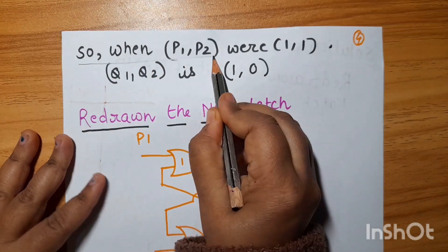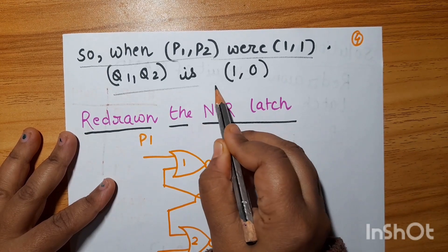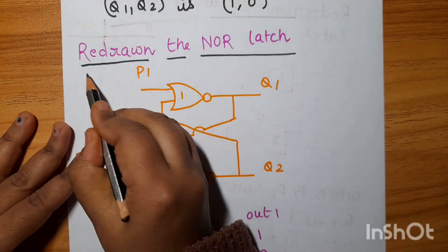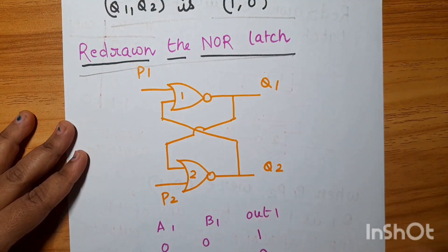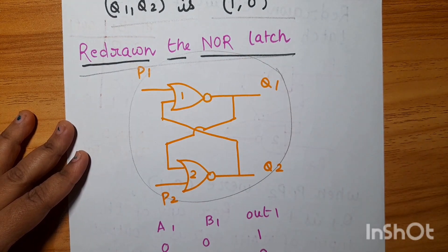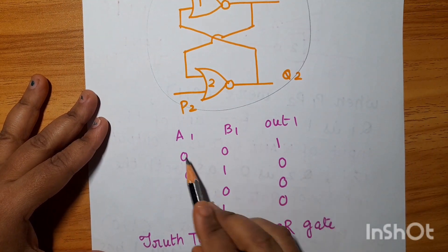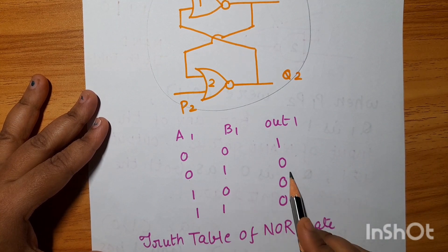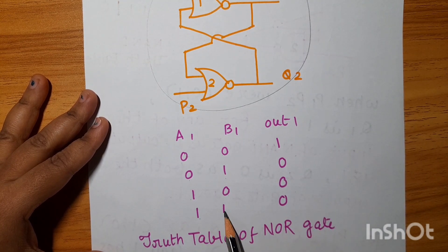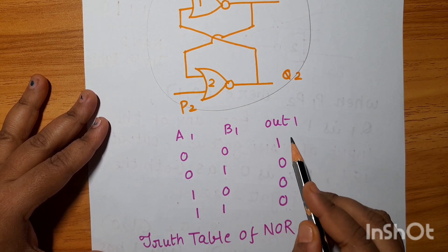So when P1,P2 were 1,1, Q1,Q2 is 1,0. Now for the NOR latch: the truth table of the NOR gate shows that any input being 1 gives output 0, and when both inputs are 0, output is 1.